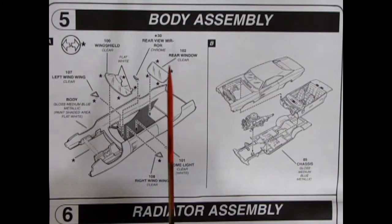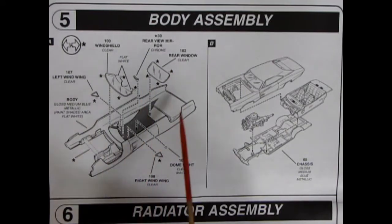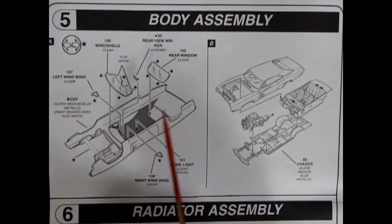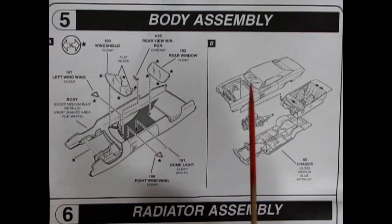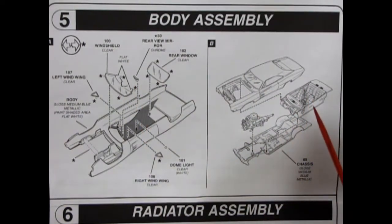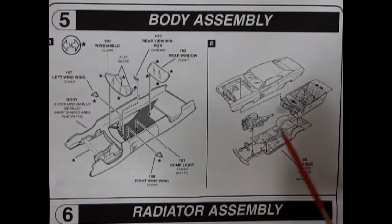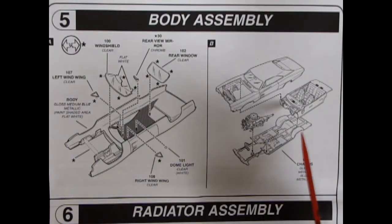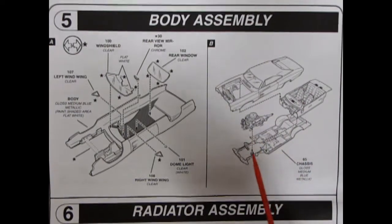Panel five is showing our body assembly going together. With of course the body here and then all our clear windows as well as the rear view mirror. And then the body hooks into the interior which then hooks onto the chassis and the engine drops in to the engine mounts. I do believe it goes one, two, three, four.